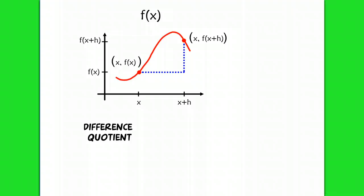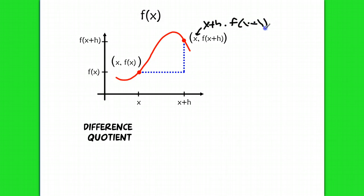Instead of points a and b, we have x, f(x) and (x+h, f(x+h)). So those two points on the graph are (x, f(x)) and (x+h, f(x+h)). The difference quotient is still just the slope of the line between those two points. My horizontal change and my vertical change are expressed using h and f(x+h) − f(x).